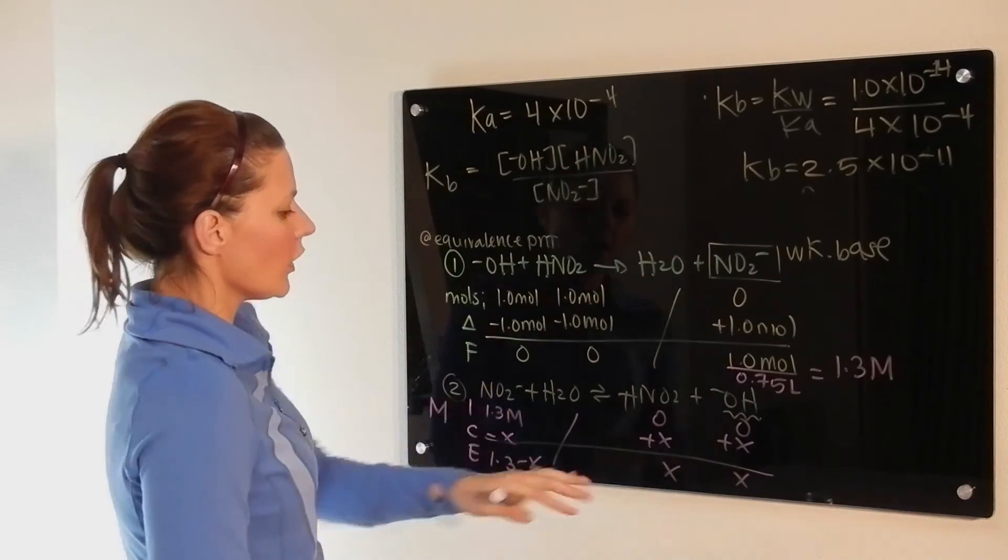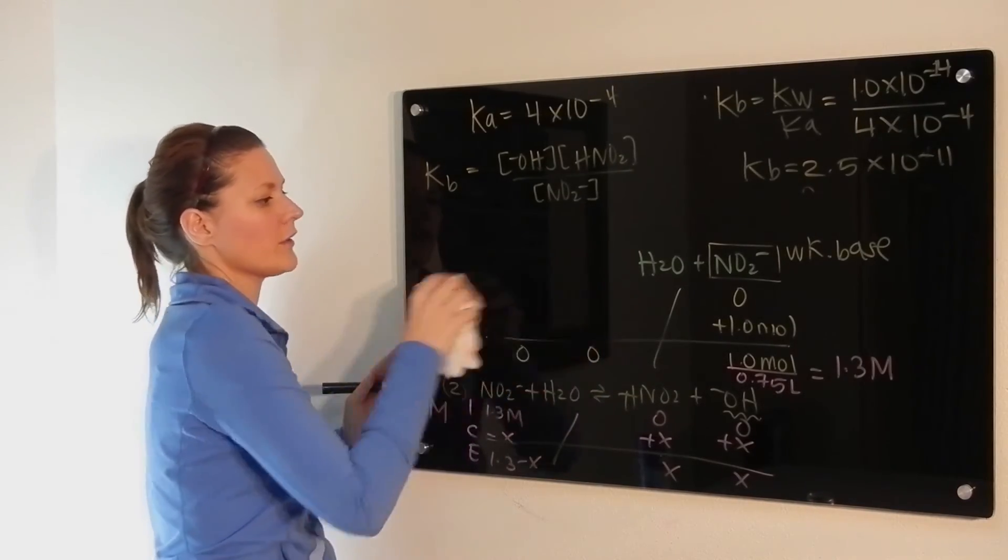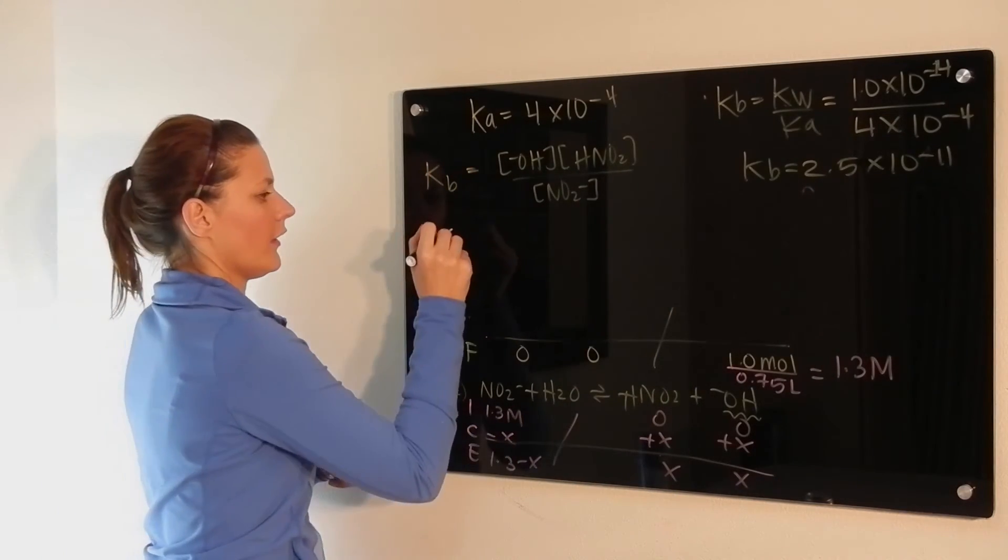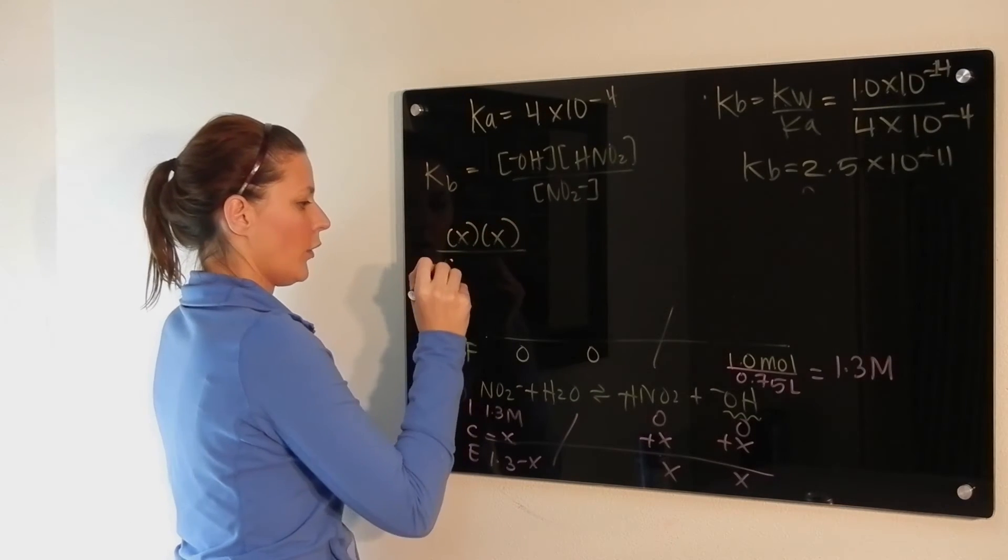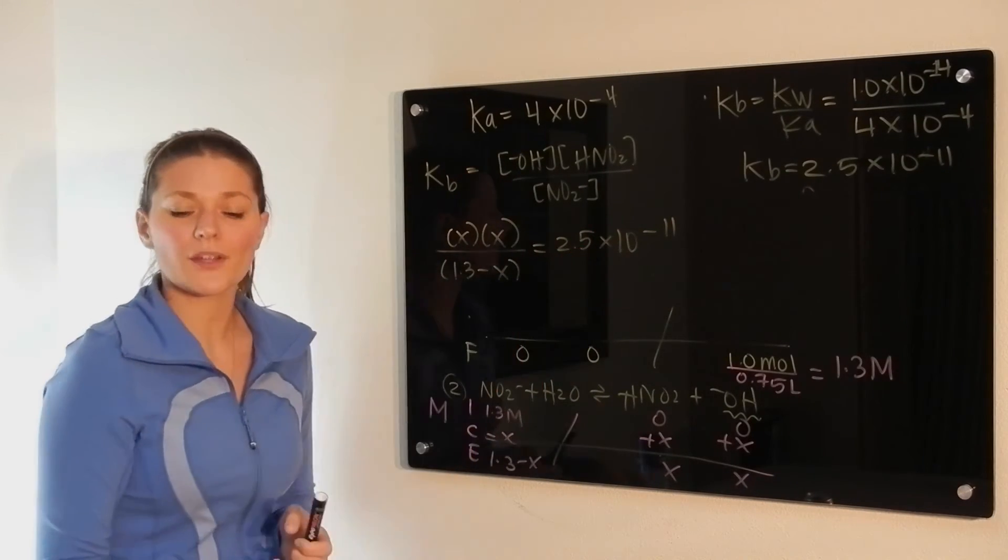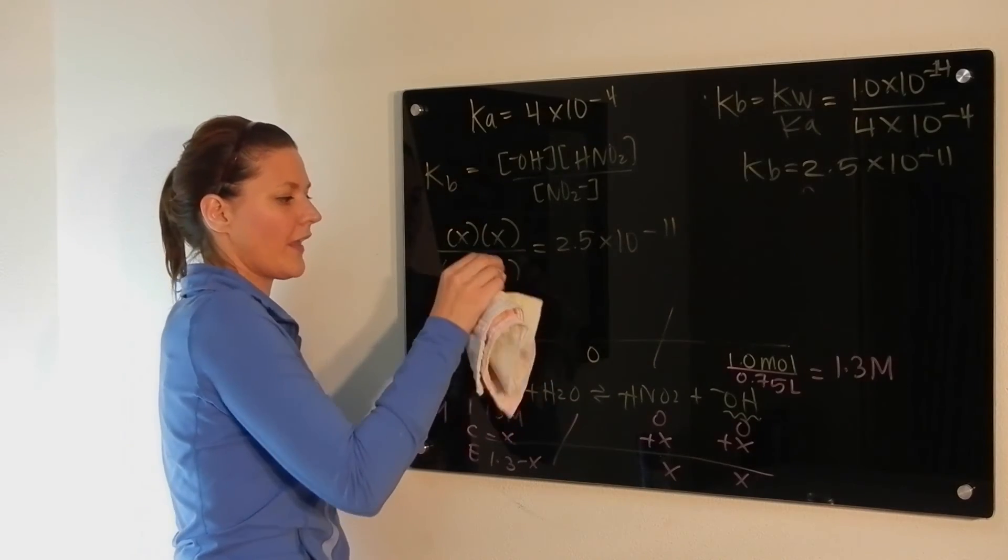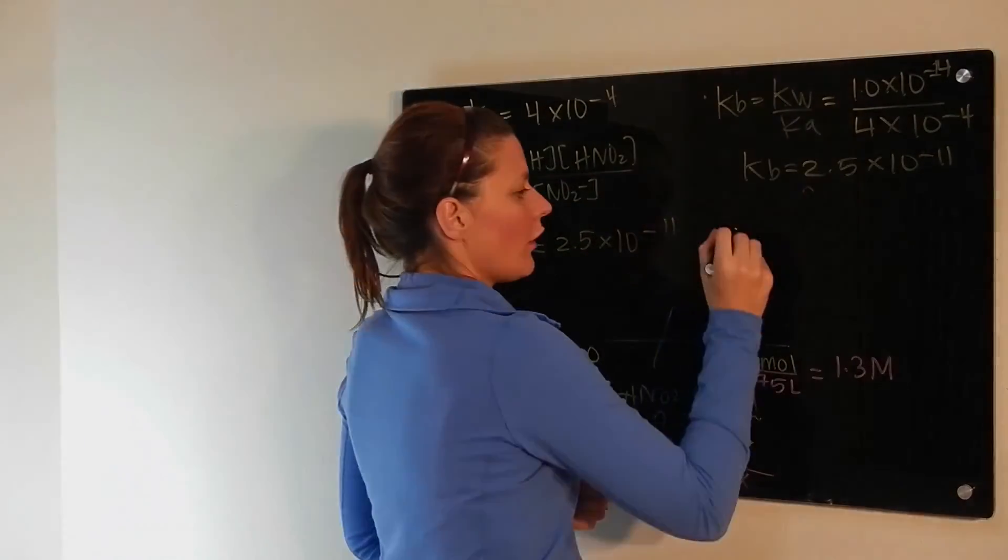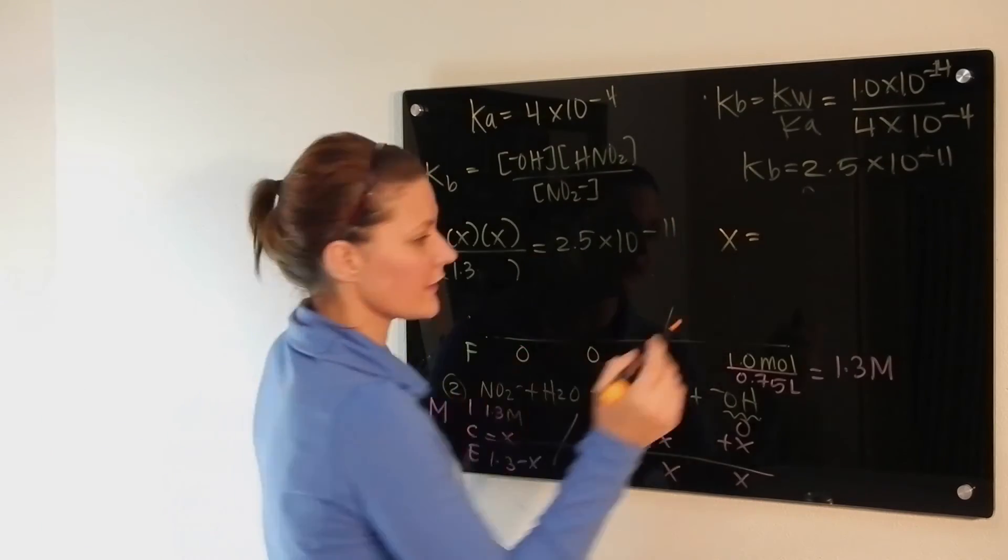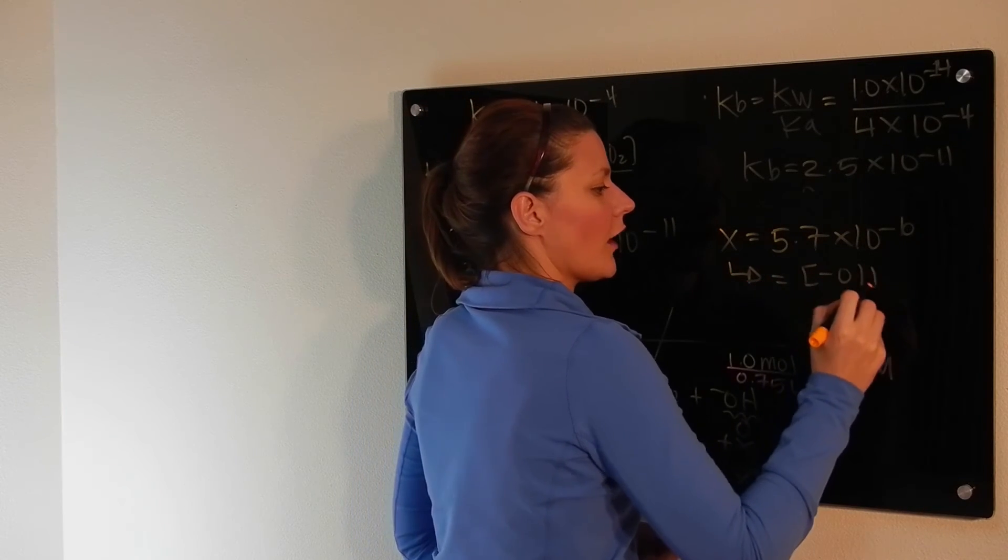Okay, so now we have the information we need. We just have to take this row, plug it in, and solve. So we'll get rid of the first step since we don't need any of that information anymore to continue on the solving. So we have x times x over 1.3 minus x is equal to 2.5 times 10 to the minus 11. Notice that this number is really small, which means that the reaction isn't going to proceed very far in the forward direction. So we can get rid of the x down there. So we're going to solve for our value of x. And when we do, we get a value of 5.7 times 10 to the negative 6.